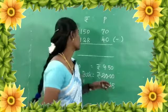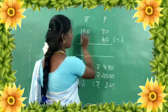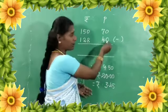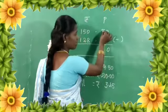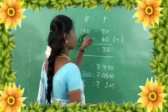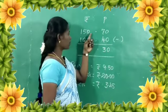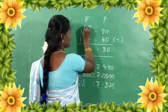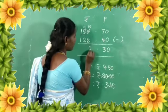Next, we will see subtraction. We need to subtract. For example, 150 Rupees 70 Paisa minus 120 Rupees 40 Paisa. After 0 minus 0 is 0, then subtract 4. We need to subtract 8 from 0, so we borrow. This gives us 10, and 10 minus 8 is 2.